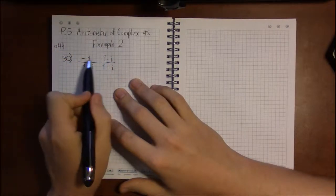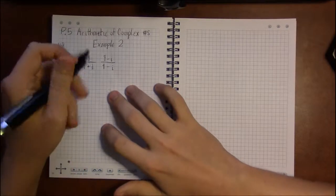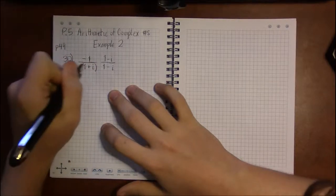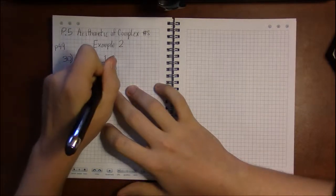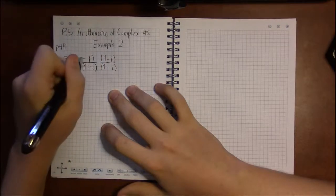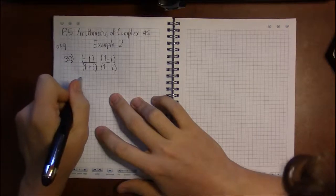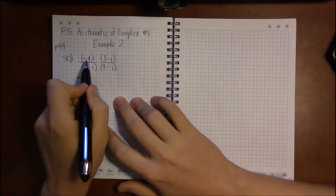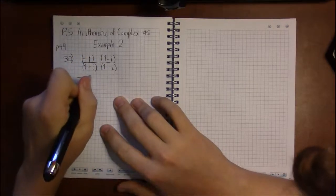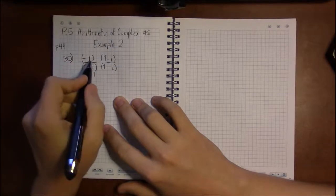So in the denominator we're going to have to foil or distribute everything out, but in the numerator it's a very simple distribution. Negative 1 times 1 is minus 1. Minus 1 times minus i is a plus i.